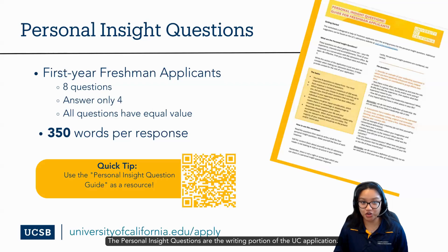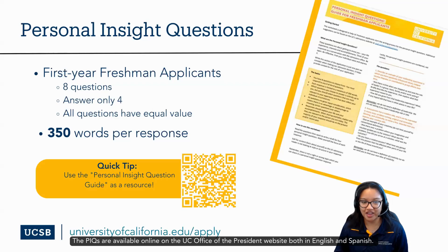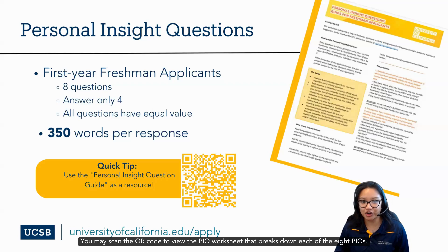The Personal Insight Questions are the writing portion of the UC Application. Freshman applicants will find that there are eight short response questions to choose from, and they are only able to answer four. The response to each of the PIQs will be no more than 350 words. The PIQs are available online on the UC Office of the President website, both in English and Spanish. You may scan the QR code to view the PIQ worksheet that breaks down each of the eight PIQs.